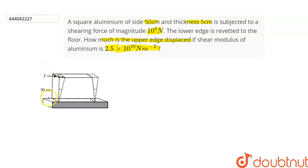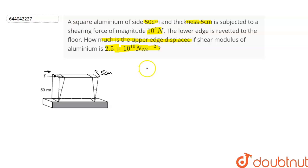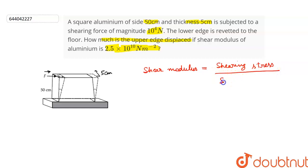Consider this figure. This is the aluminum slab given to us whose length is 50 cm and thickness is 5 cm. A shearing force is applied on this side. As the lower edge is fixed on the floor, the upper edge gets displaced by this angle as seen in the figure, and we have to calculate the displacement of the upper edge. We are given the shear modulus of aluminum. Shear modulus is equal to shearing stress divided by shearing strain — let this be equation 1.